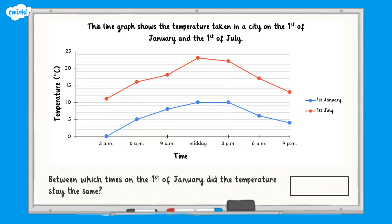Sometimes we can answer questions about a graph just by looking at the shape the graph is creating. For example, between which times on the 1st of January did the temperature stay the same? We can look at the shape of the line to answer this question. The line does not go up or down between midday and 3pm. So this shows us that the temperature stayed the same.